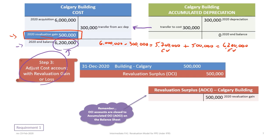This is accomplished through a journal entry: debit the building $500,000, credit revaluation surplus $500,000. The revaluation surplus is an Other Comprehensive Income (OCI) account. OCI accounts are closed to Accumulated OCI (AOCI) on the balance sheet at year end. At December 31, 2020, we have an asset with a $6.2 million market value, zero accumulated depreciation, and a revaluation surplus of $500,000. This gain does not go to net income.